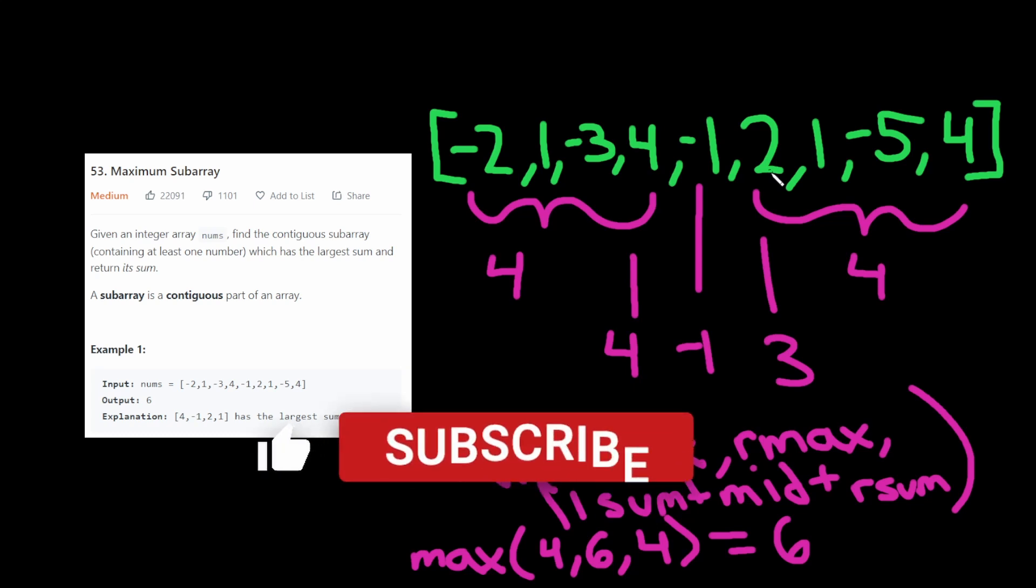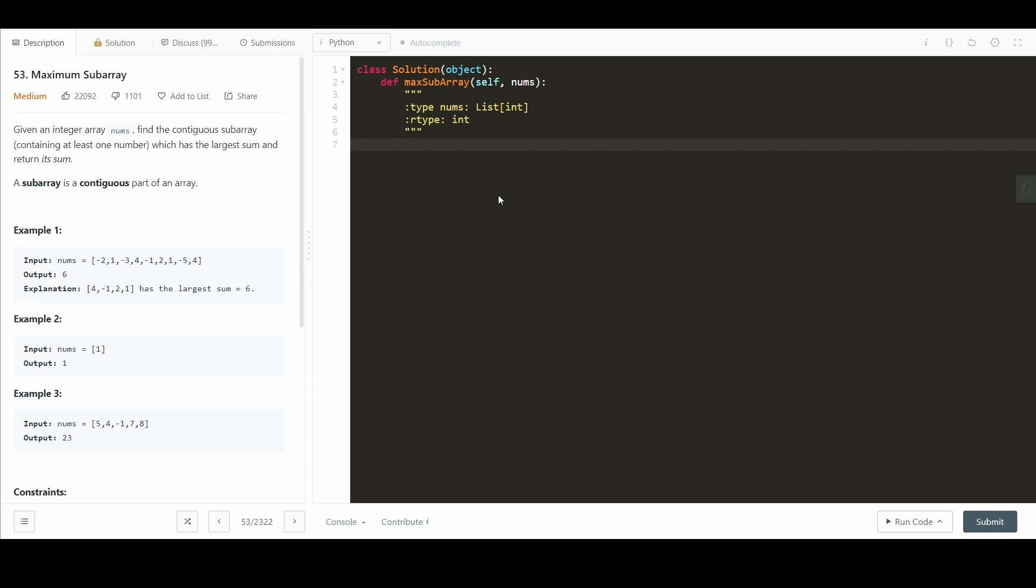And with that said if you found this helpful so far please give a like and a subscribe because it really helps the YouTube algorithm. Now let's get to the code. Okay so I'm only going to show the dynamic programming solution because it's the most straightforward to understand. So first we have our output which is going to be initialized to the first element of nums. And then we have our data structure and I'll just call this sums. We'll initialize it to just nums at 0 for the beginning.